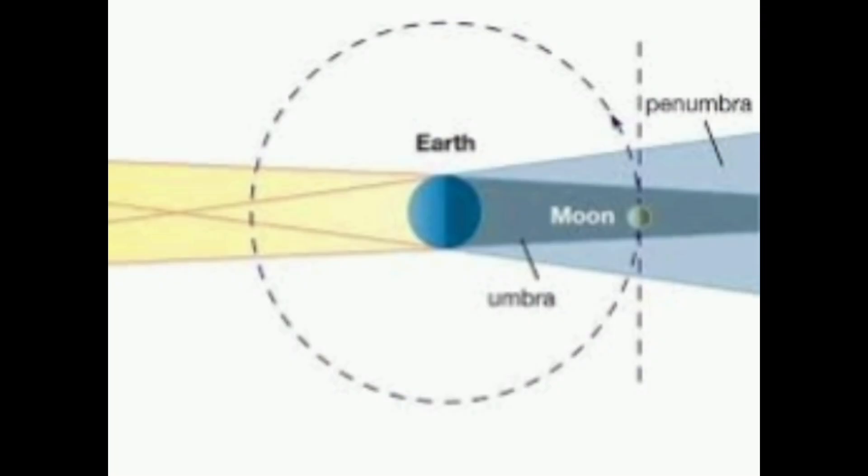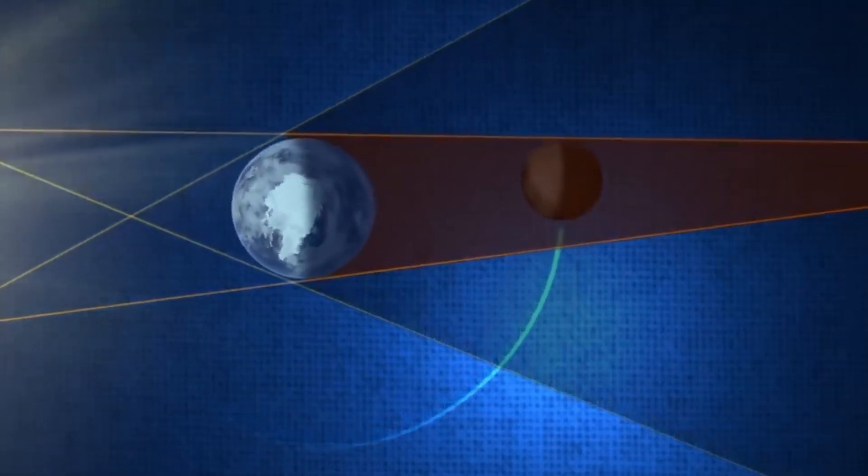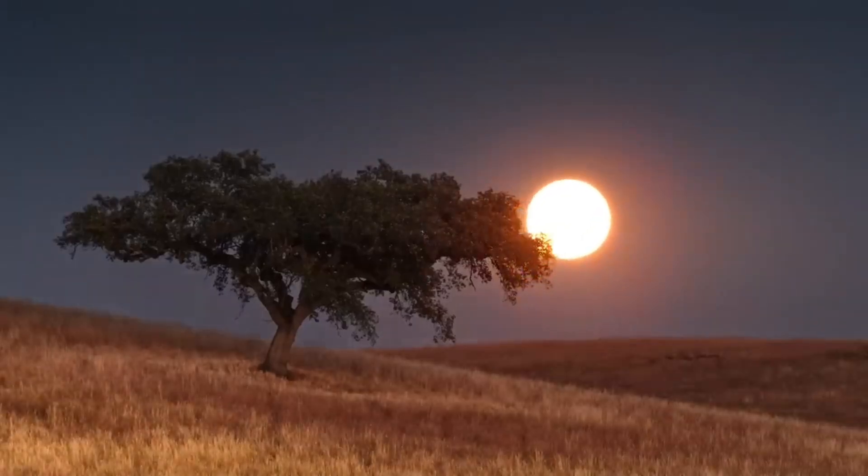The first is the umbra, the dark central shadow where the earth completely blocks sunlight. If the moon passes through this region, we see a total lunar eclipse.